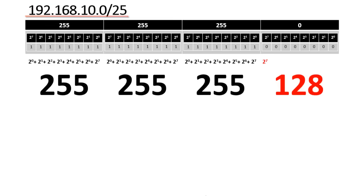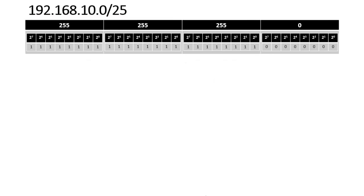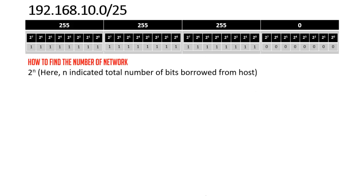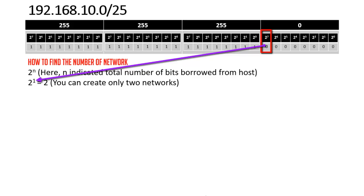Now let's look at how to find the number of networks from this address. Just follow the formula 2^n, where n indicates the total number of bits borrowed from the host. Since we borrowed only one bit, the total number of networks is 2^1 = 2, meaning only two networks can be created.